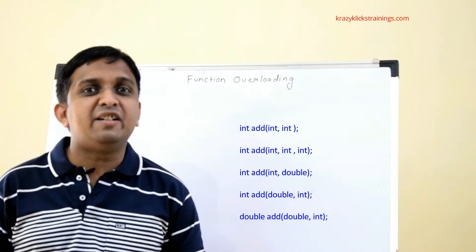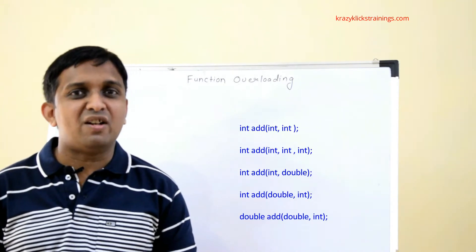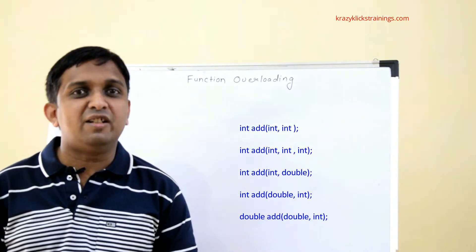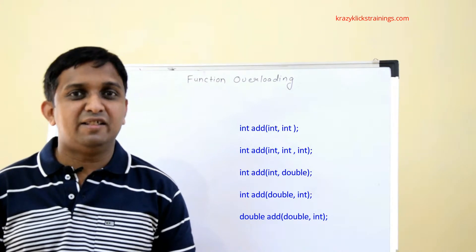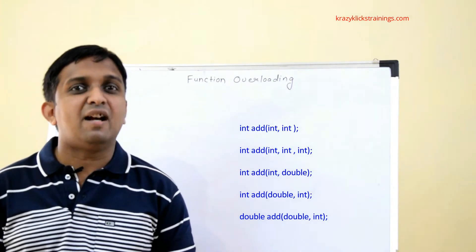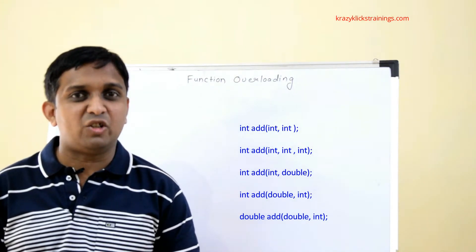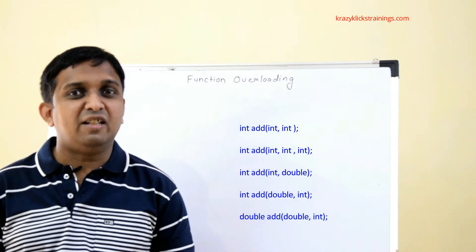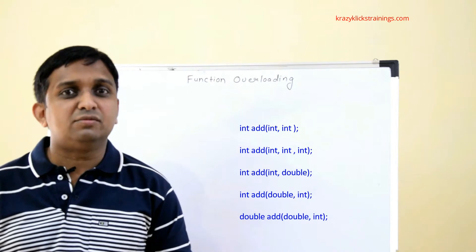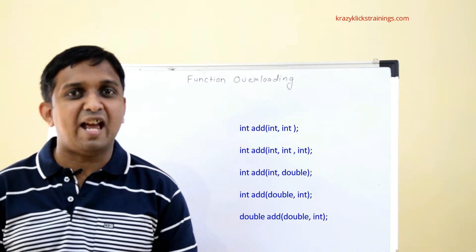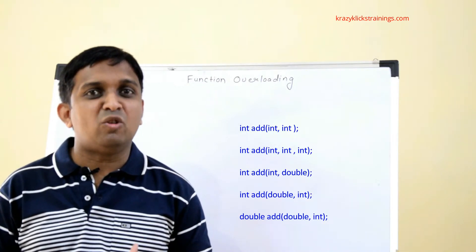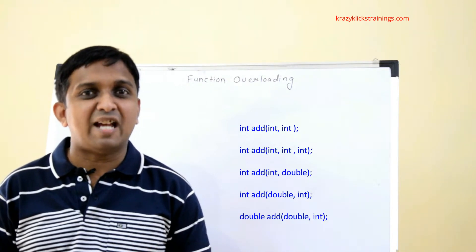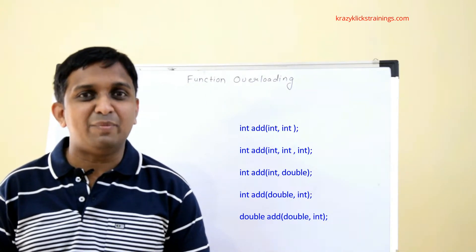Suppose I write one more add function with return type double, taking again double and integer arguments. Now the last add function and the second-last add function have the same signature, so they cannot exist simultaneously in my program.